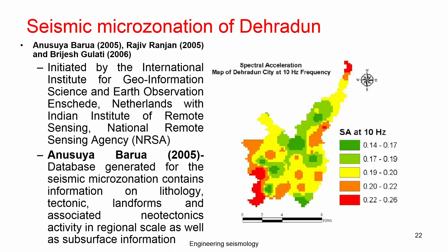Students were extensively involved in different aspects of microzonation, and finally they produced a microzonation map. The contributors include Anusha Baru (2005), Raju, Ranjan, and Brijesh Gholthi, who all worked with Mahajan at Valdiya Institute of Technology. This microzonation work was initiated by the International Institute for Geo-Information Science and Earth Observation, Netherlands, the Indian Institute of Remote Sensing, and the National Remote Sensing Agency (NRSA).